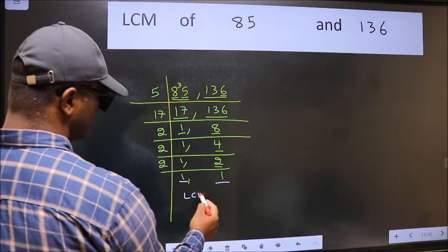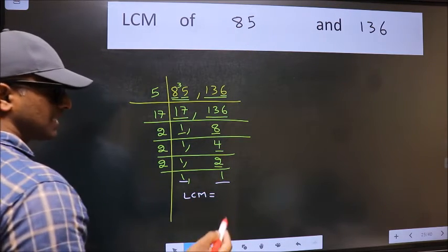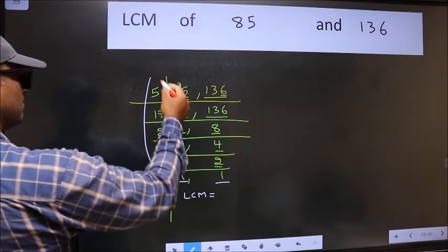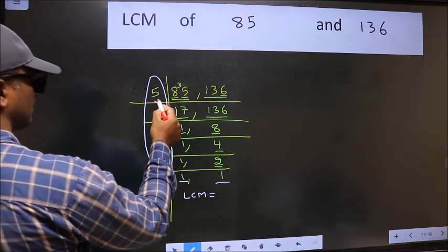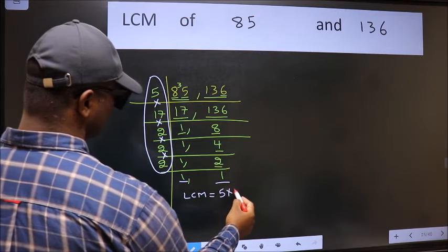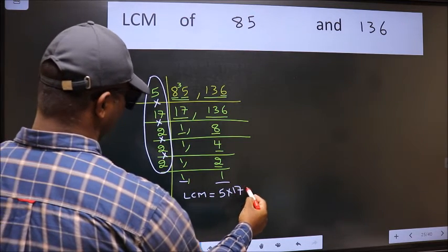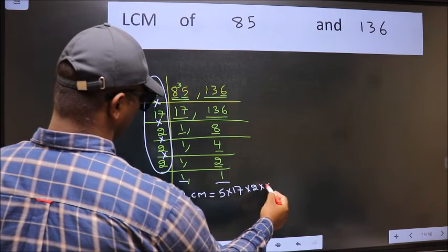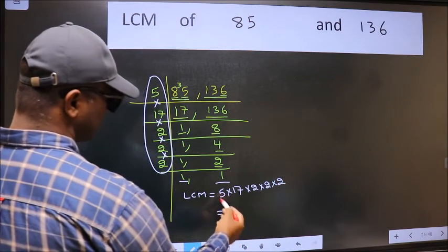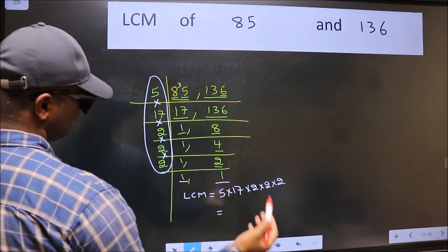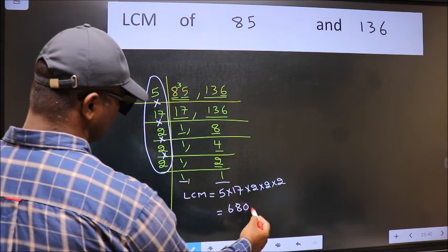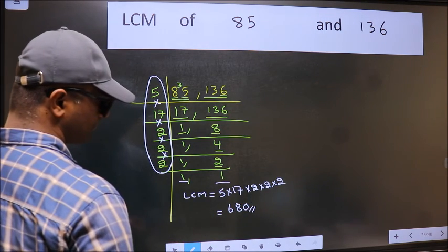So our LCM is the product of these numbers: 5 into 17 into 2 into 2 into 2 into 2. When we multiply these numbers, we get 680 as our LCM.